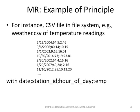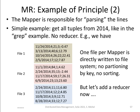Let's look at a more complicated example. We have a CSV file containing weather information: the date as the first entry, the station ID (imagine stations around the country each with a unique ID), the hour of the day, and finally the temperature. We want to do some analysis over this file, which is stored in the distributed file system. For a start, we want only the information from the year 2014.